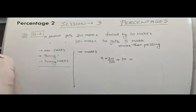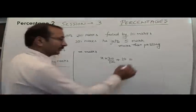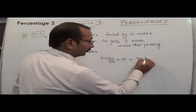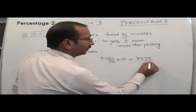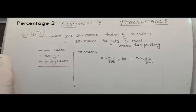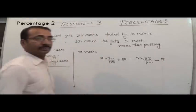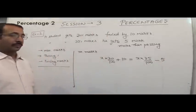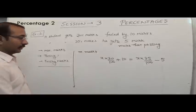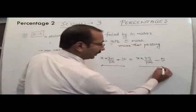In the second case, he gets 35% of the marks — x × 35/100 — and he gets 5 marks more than the passing marks. If I subtract 5 here, he will just pass. So this expression also equals the passing marks.